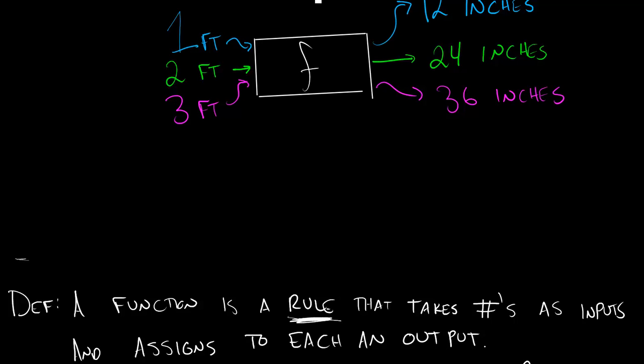So in our example machine above, we have inputs here on the left side, and our function takes these inputs and assigns them an output here on the right side.